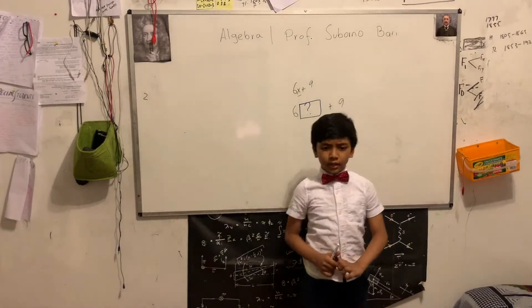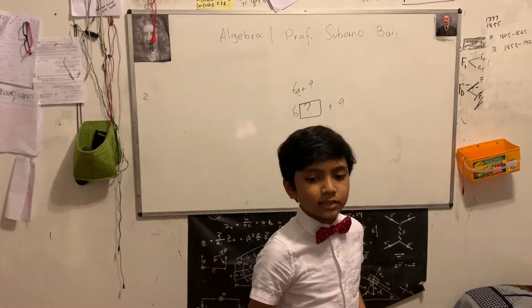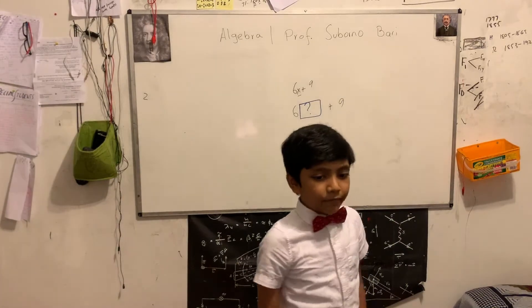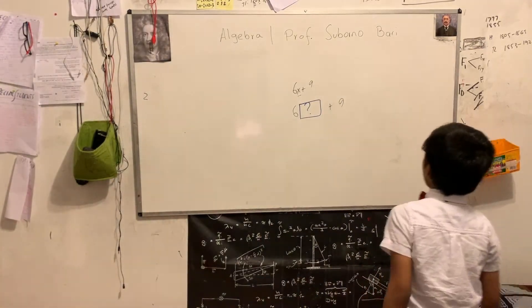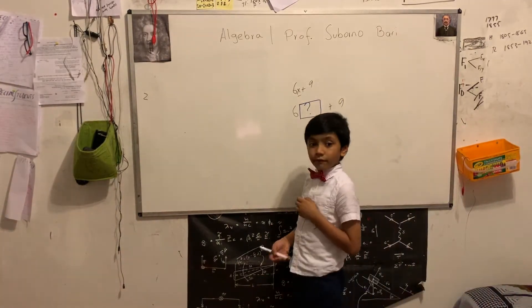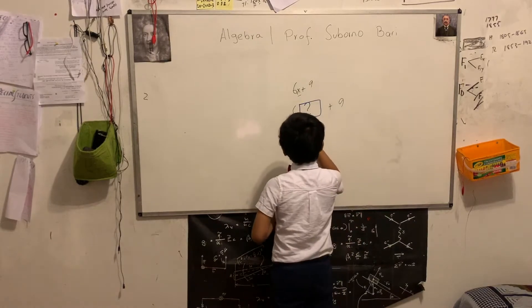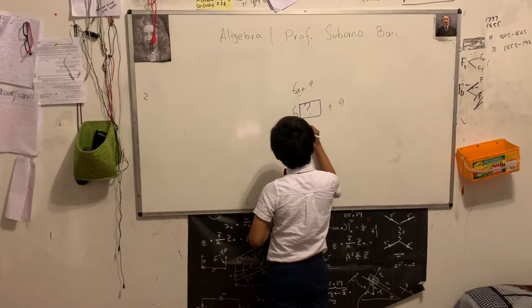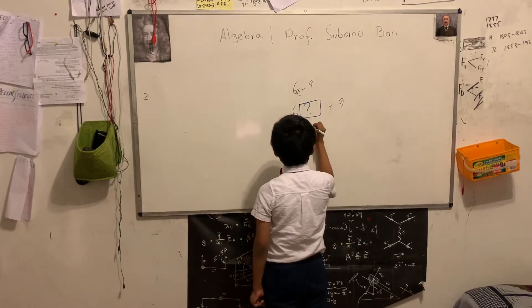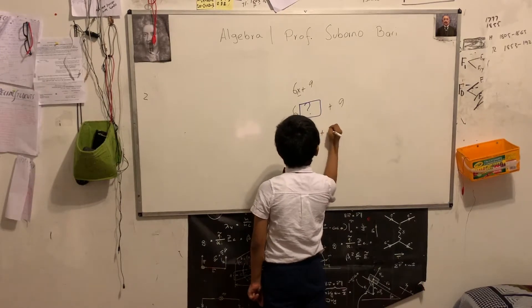Now, we have uncertainty what it is. We have no idea what it is. But we can plug in certain values for us. So let's say if we plugged in 1, we would have 6 times 1 plus 9.